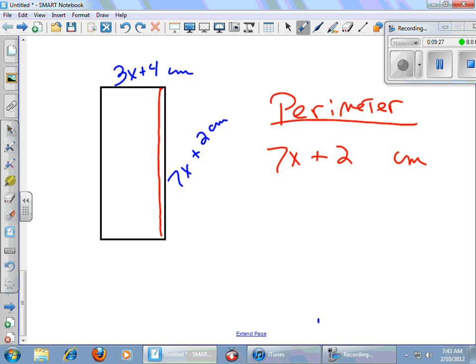And then when I walk this way, I walked 3x plus 4 centimeters. And when I walk this way, it's another 7x plus 2 centimeters. And then finally, when I come this way, I've gone all the way around. It's another 3x plus 4 centimeters.